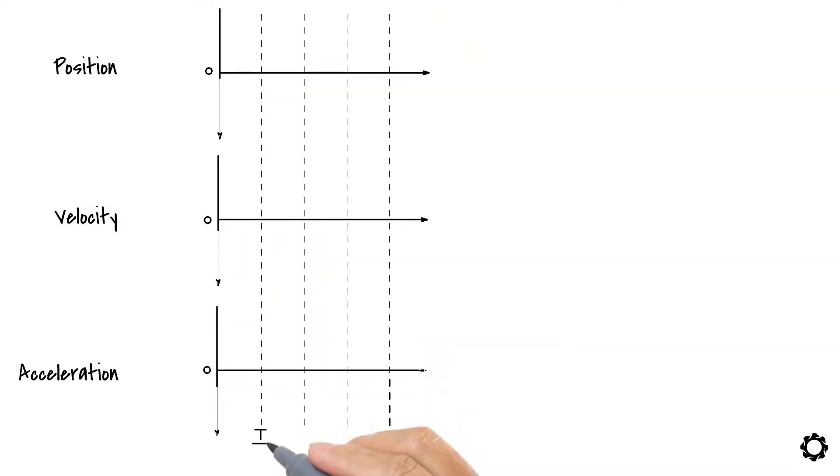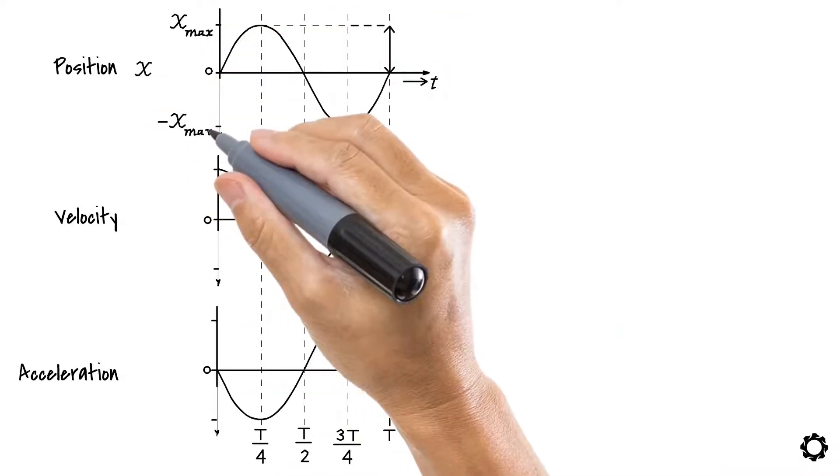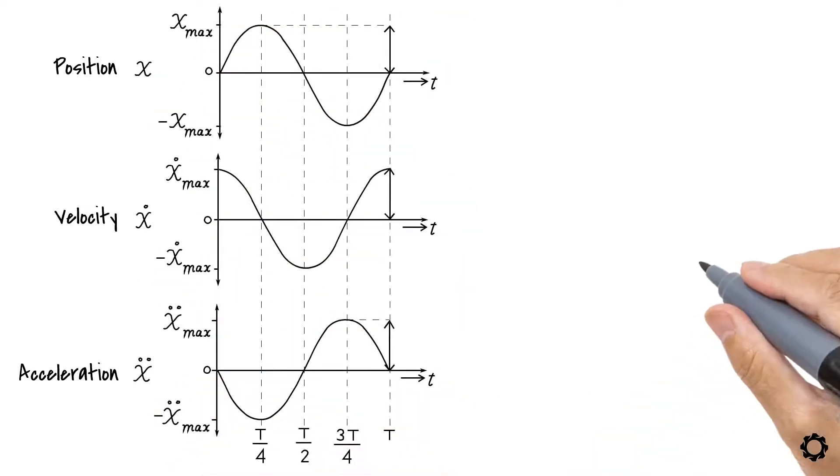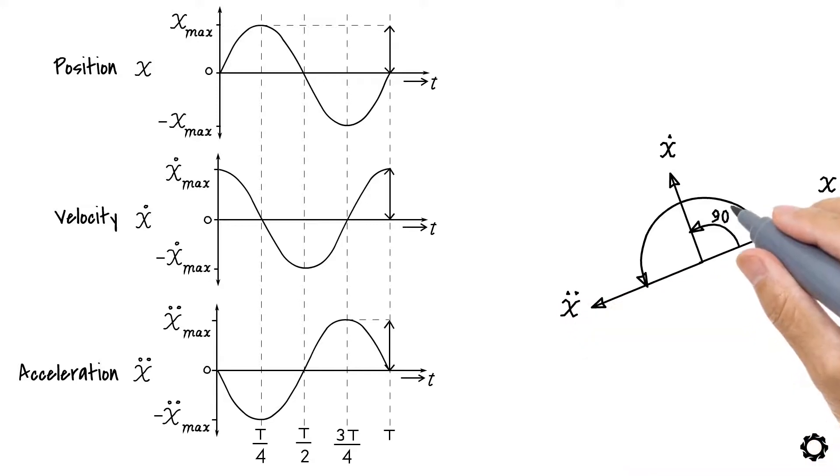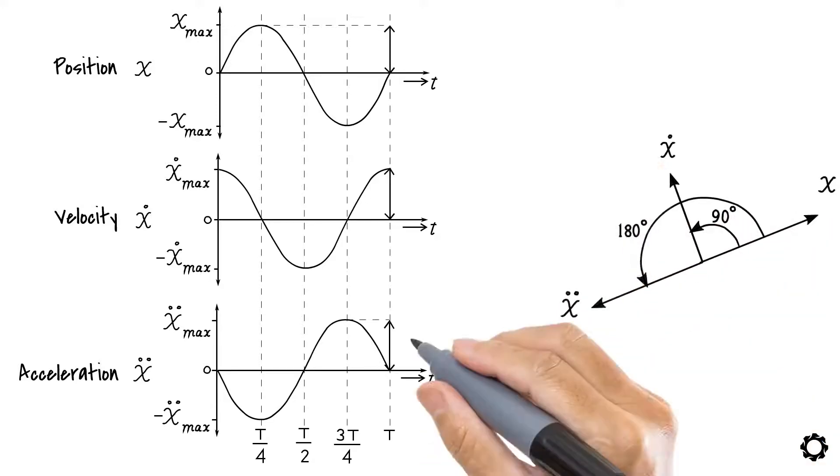For instance, if we observed the motion of one swing, we could measure that the velocity of the swing has 90 degrees positive phase shift compared to the swing's position. Similarly, the acceleration and velocity also have another 90 degrees phase shift between them.